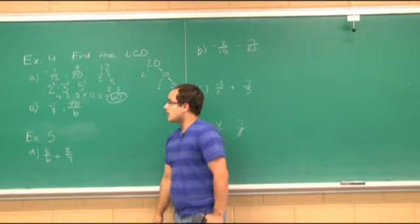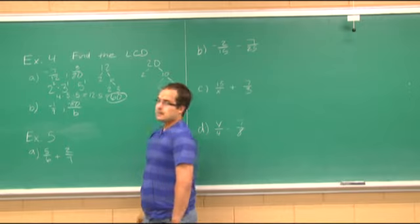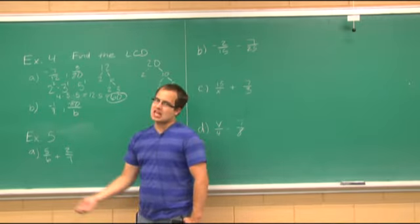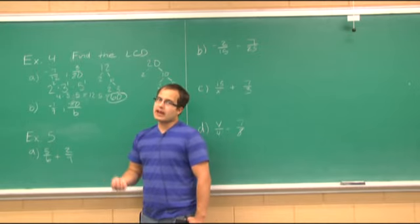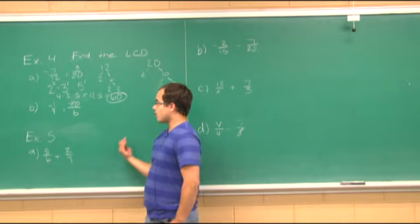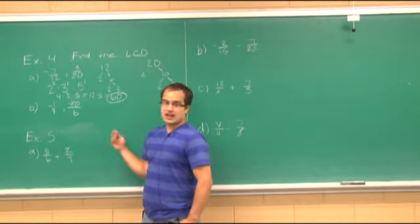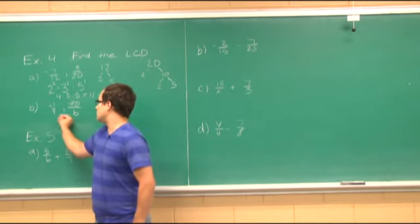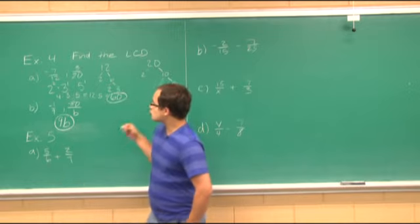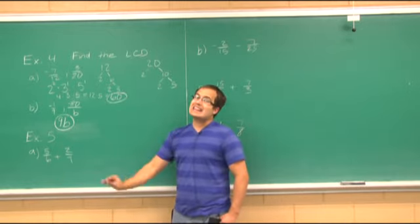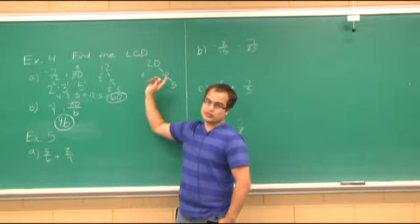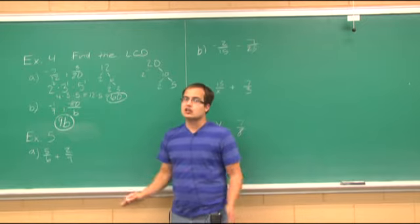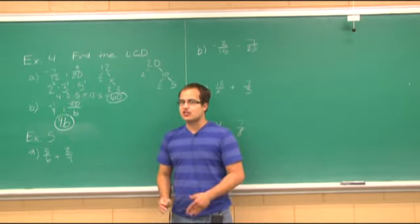Now part b: negative 1/9 and negative 80/b. Are nine and b going to have anything in common? No — one is a constant and one is a variable. So in order for them to have an LCD, I need to include both. My LCD is going to be 9b. That's a shortcut you can use when the denominators have nothing in common — you just multiply them together to get the LCD.